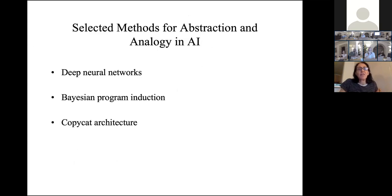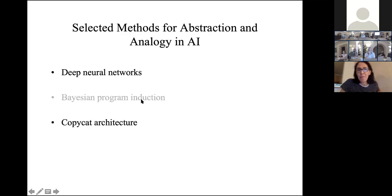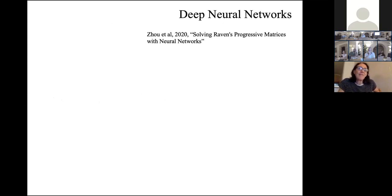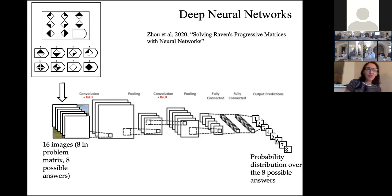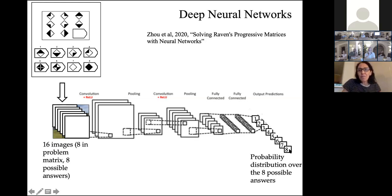Let's look at a few different methods. Deep neural networks have been applied to some of these domains — in particular, there's been a flurry of work on Raven's Progressive Matrices. One simple way is to take the eight images in the matrix plus eight possible answers as input to a deep neural network, with output being a probability distribution over the eight possible answers. The problem of course is that neural networks need lots of training examples, especially with 50 layers. One group created a dataset by automatically generating these problems — 42,000 training examples and 14,000 test examples — using a stochastic image grammar.